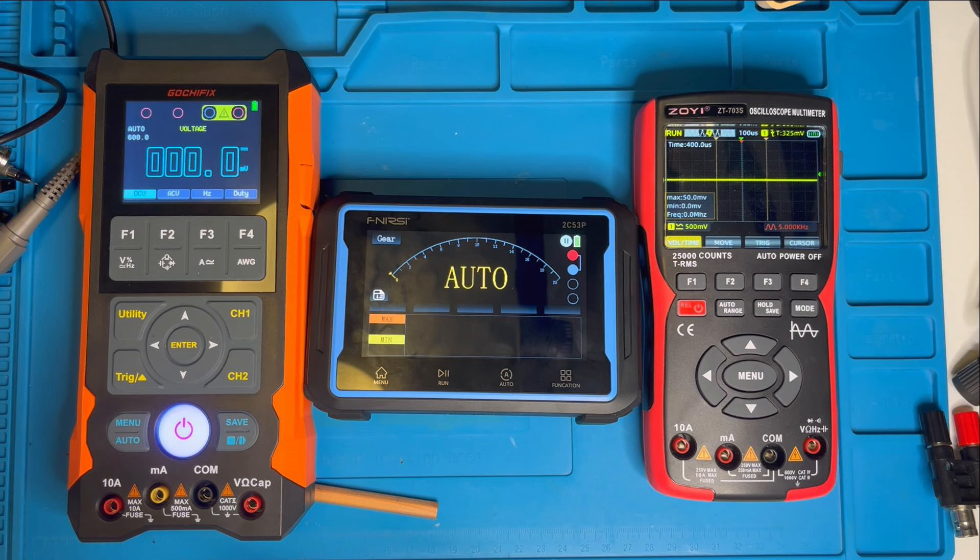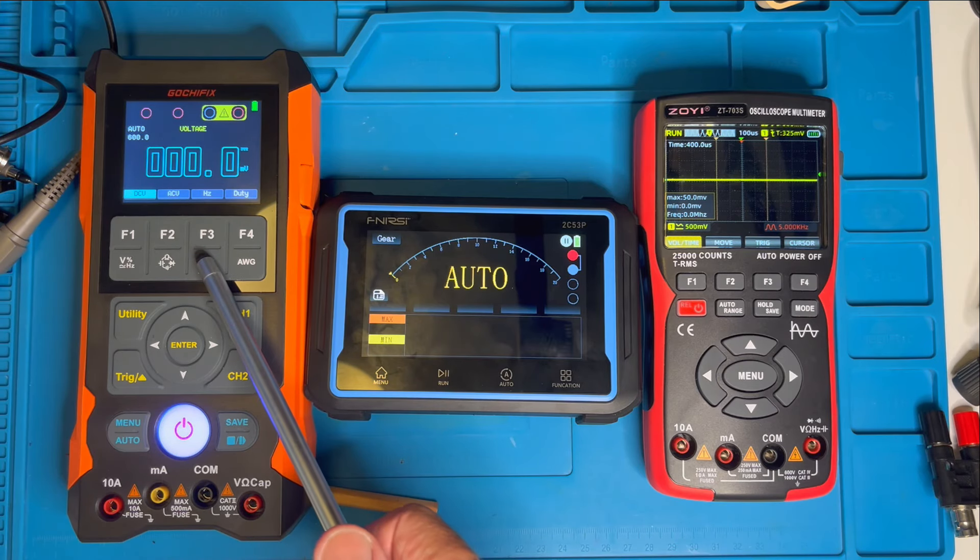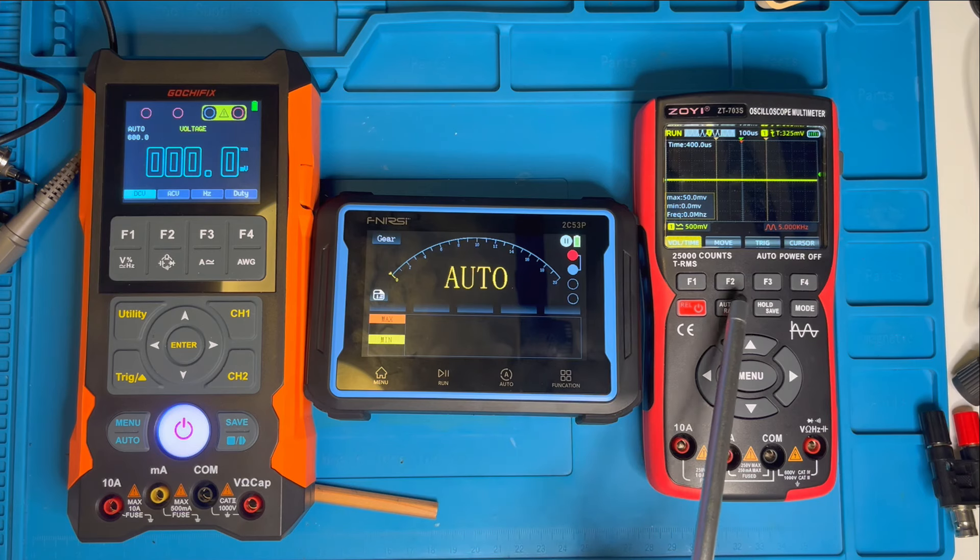Now, before I conclude this review, I'd like to get your feedback on how we're going to do the next video, the functional and performance review. So I have a GochiFix 80 megahertz multi-function device and I also have a Zoe ZT703S, which is another 50 megahertz device. So do you think I should do a review just upon the GochiFix 2C53P, or would you rather I do a comparative one and see how the functionality of the 2C53P compares with the GochiFix and the Zoe devices? So let me know in the comments and I'd love to hear your thoughts.